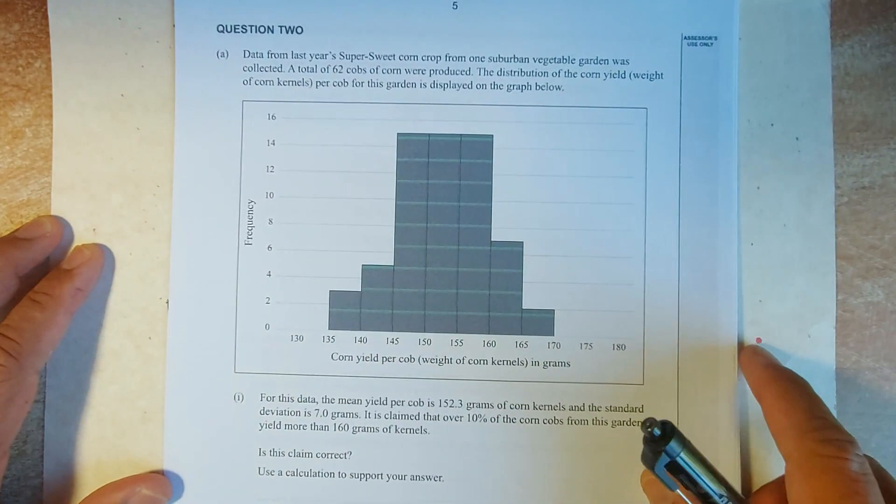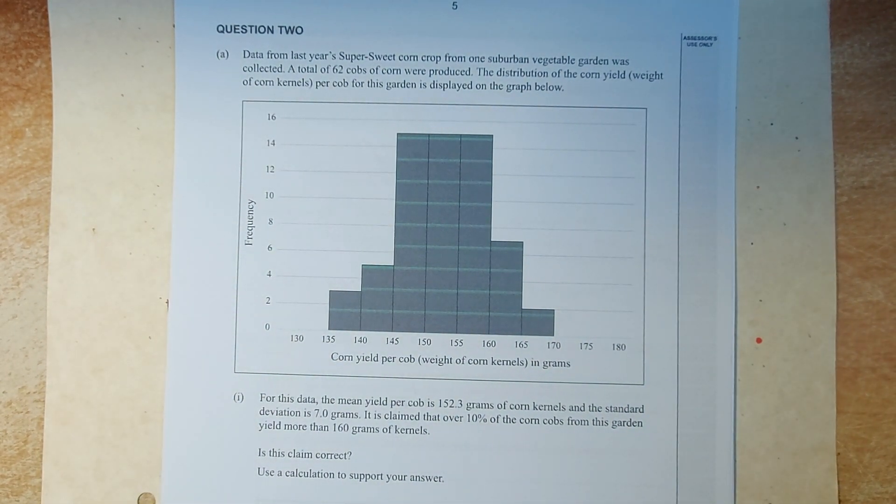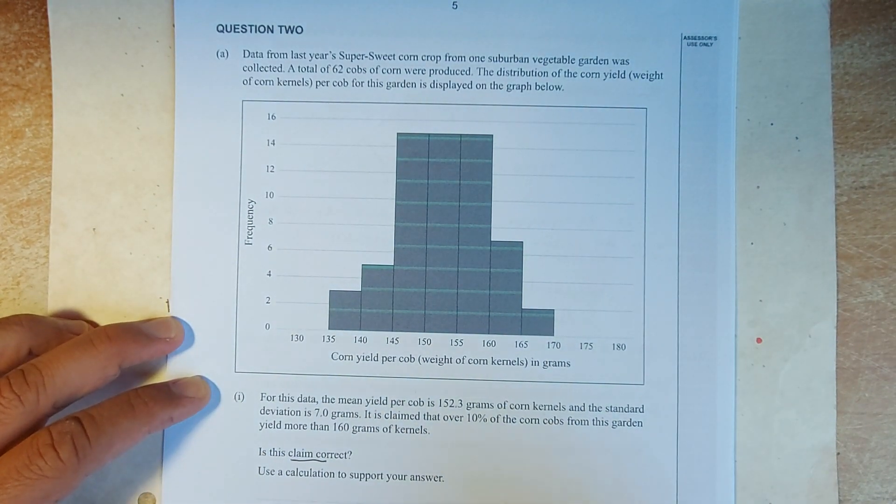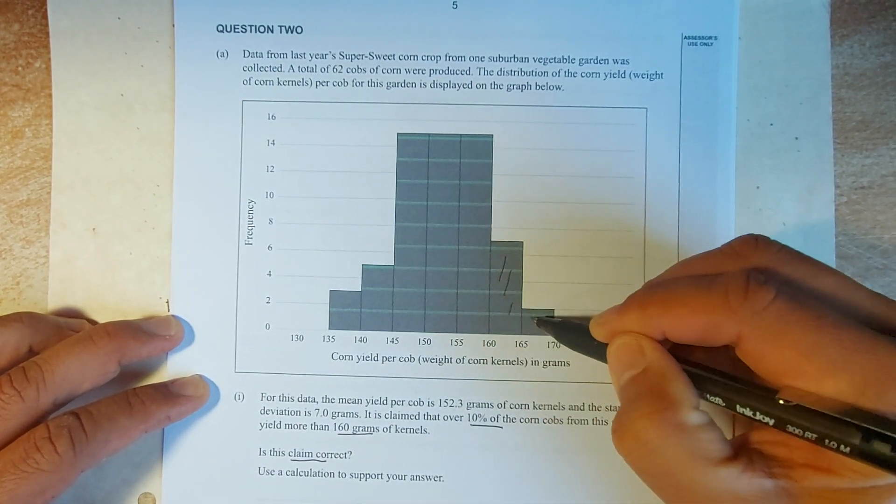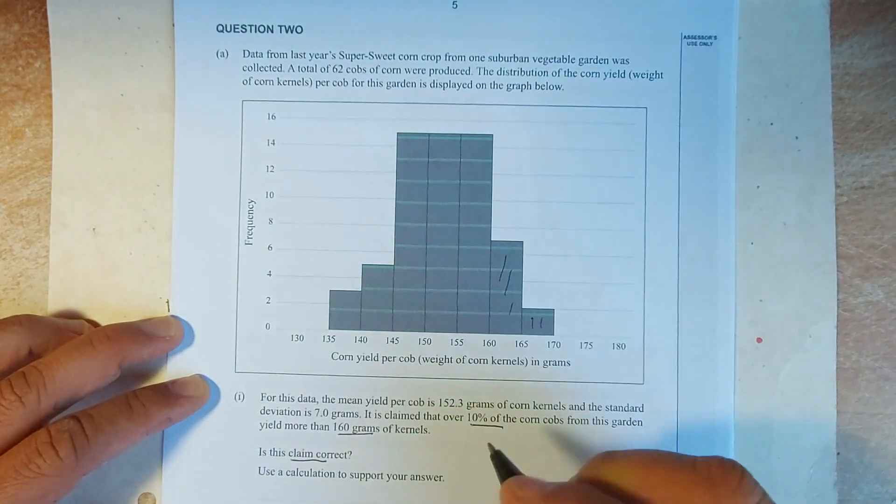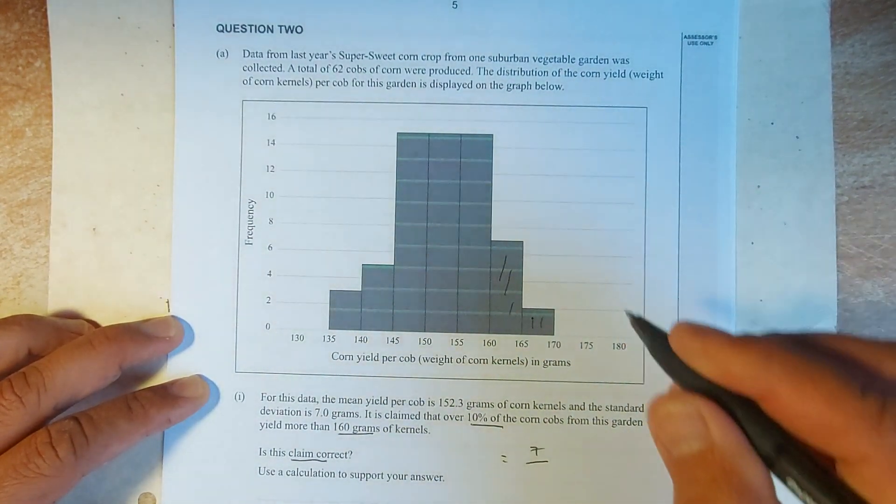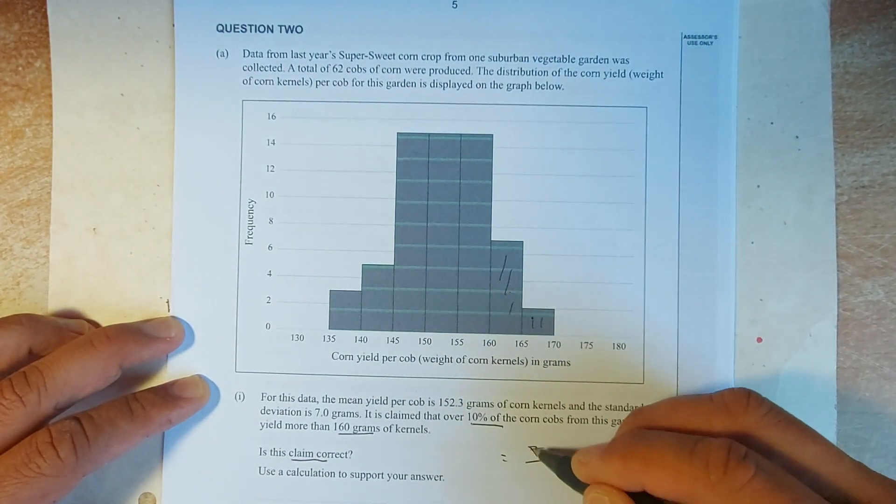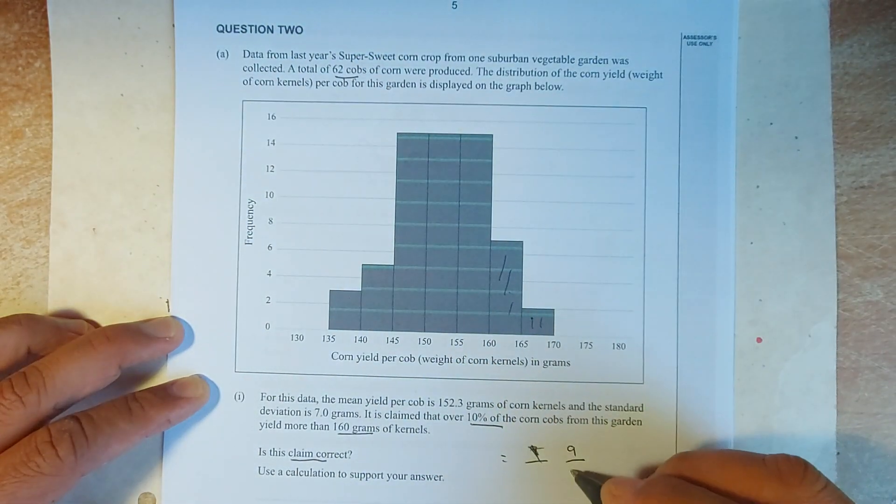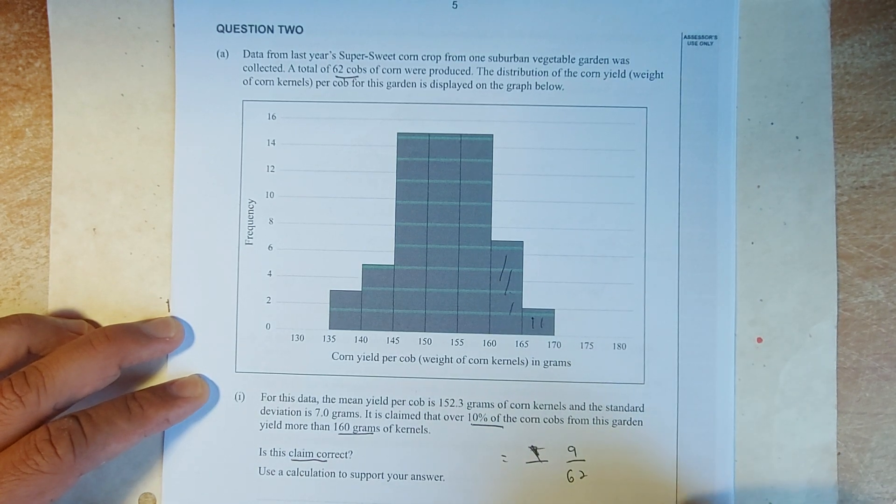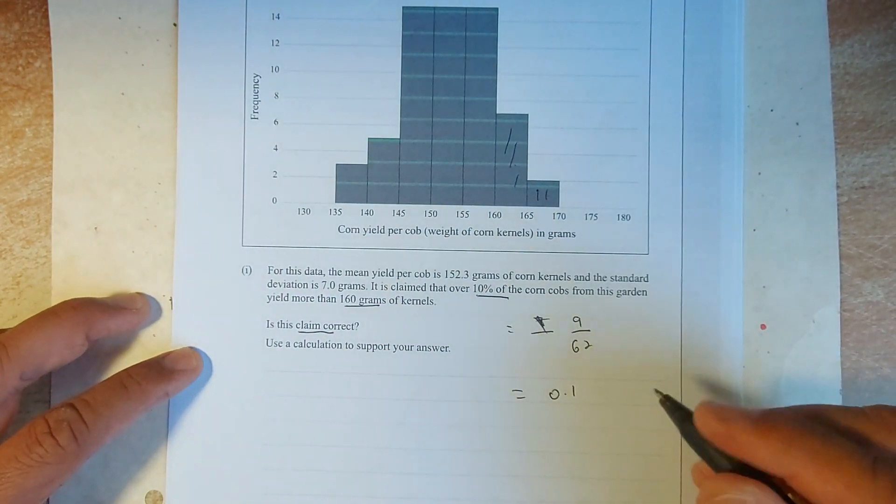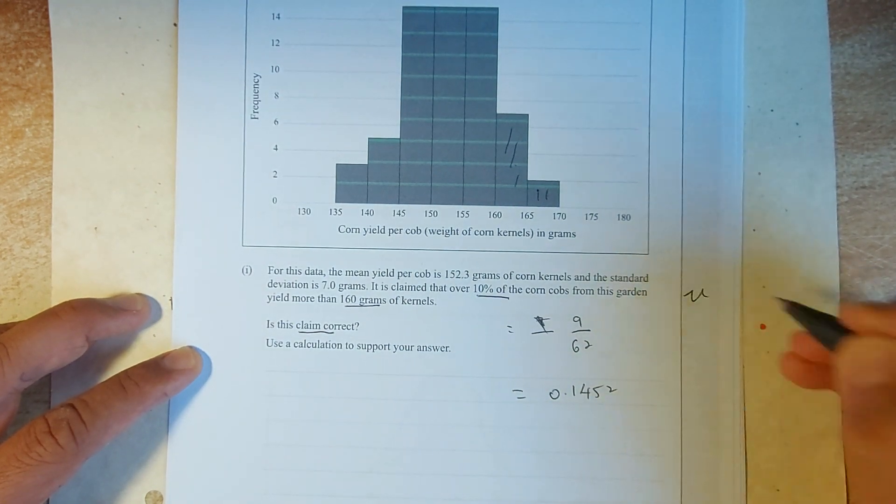Great. We shall look at question 2 now. The question 2 is straightforward. So, the first question in question 2 is, have a read first. They ask you to calculate what is the probability that is the claim correct that 10% of the cops are more than 160. So, more than 160 is this area here. So, it's with 7 plus 2. The area is going to be 7 out of... No, sorry. 7 plus 2 is 9. Sorry. 9 out of 62.